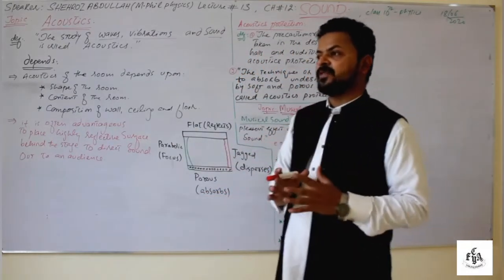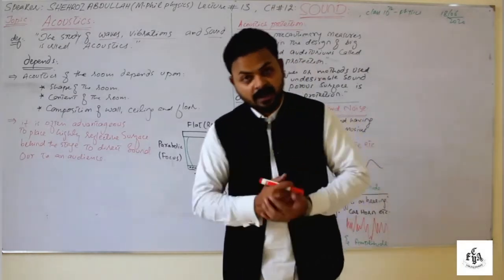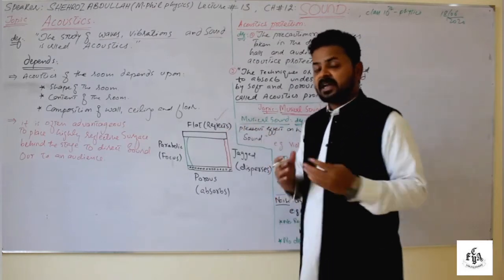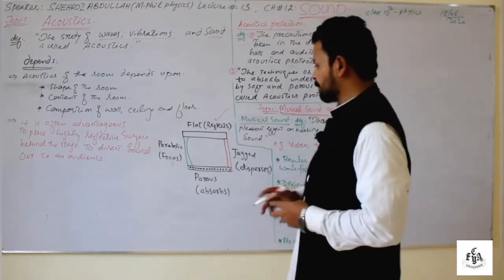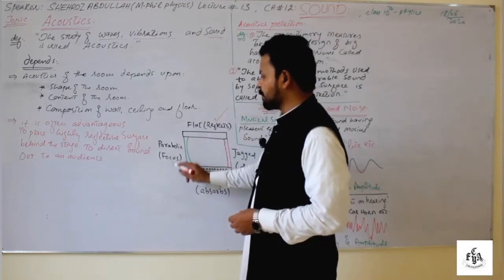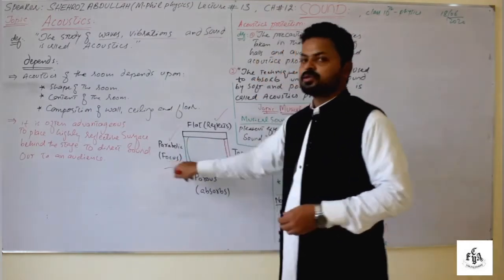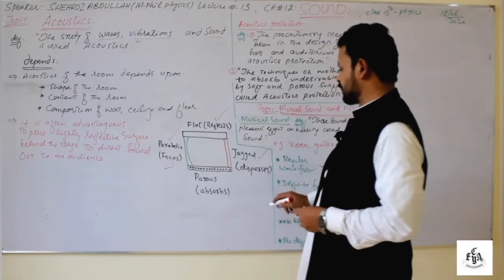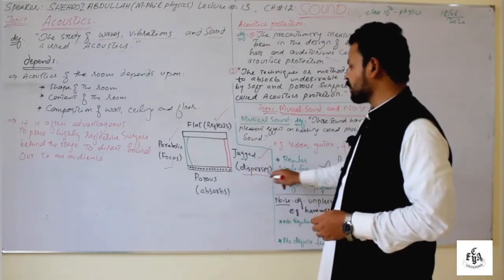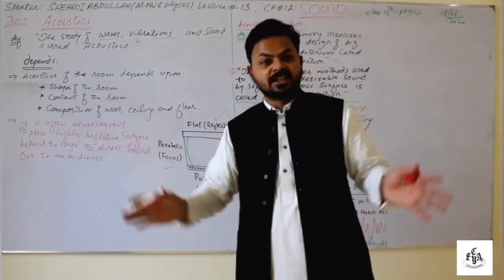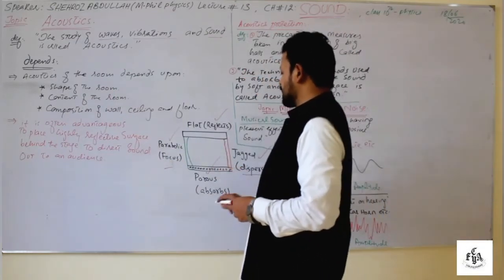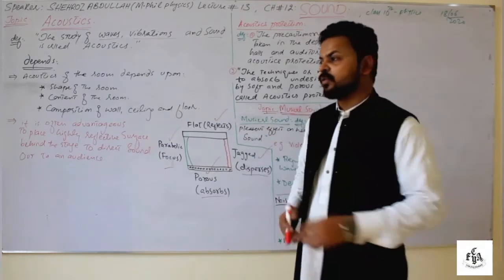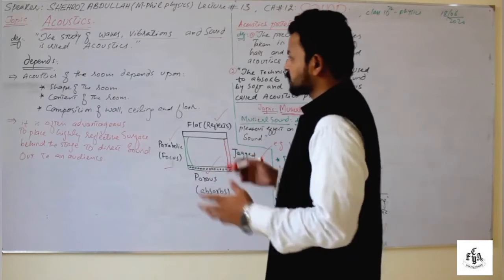Different surfaces have different properties. A flat surface is used for reflection of sound waves. A parabolic surface is used to focus sound waves on a certain region. A jet surface is used for dispersing sound waves into multiple directions. A porous surface is used to absorb sound waves — it has pores that absorb the sound. This was all about acoustics.